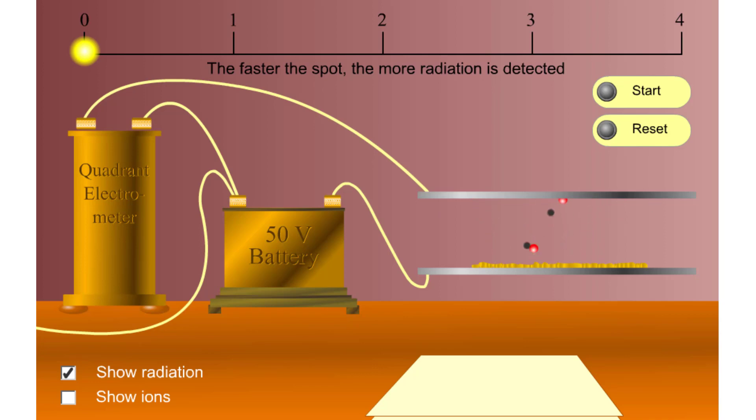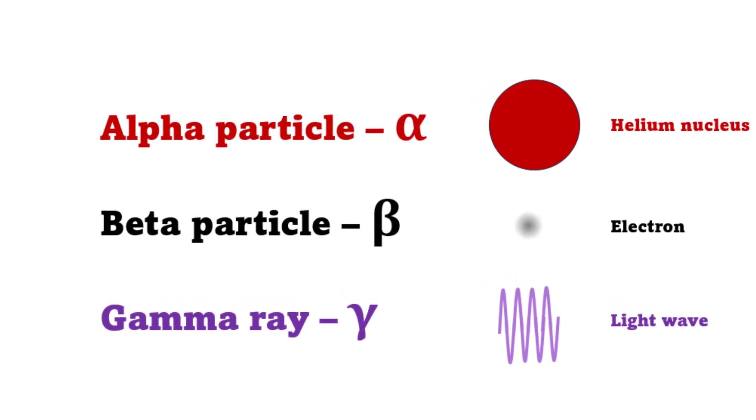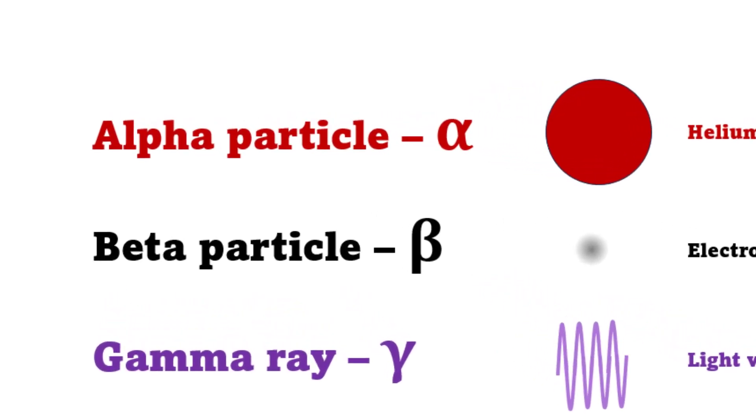The first type, shown in red, was stopped by a single sheet. Rutherford called these alpha particles. The second, shown in black, passed easily through two sheets. Rutherford called these beta particles. He was just using the Greek version of the letters A and B.